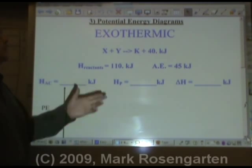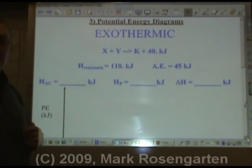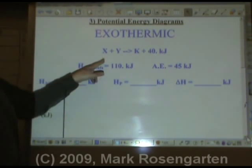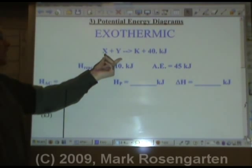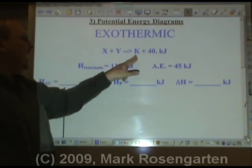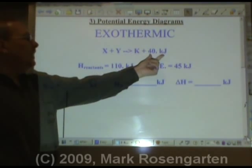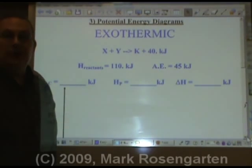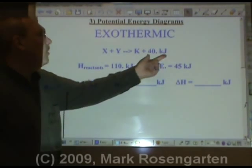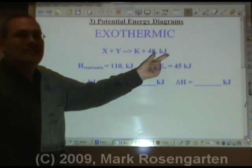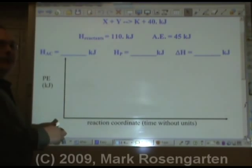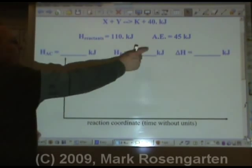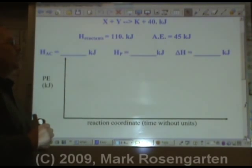Potential energy diagrams for an exothermic reaction. Here's the reaction: X plus Y are your reactants, they form K, and 40 kilojoules are lost. How do I know those kilojoules are lost? Because they're on the right side. Using this information, we can find out other information.